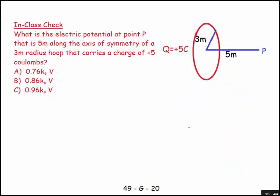So let's have a quick look at one of these. What is the electrical potential at a point P, there's the point P over here, that is 5 meters along the axis of symmetry of a 3 meter radius hoop that carries a total charge of plus 5 coulombs. So I would say V is equal to the integral of KE DQ over R.